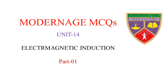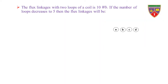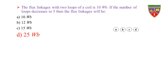Modern Age MCQs, Unit 14: Electromagnetic Induction. Question: The flux linkages with two loops of a coil is 10 Wb. If the number of loops decreases to five, then the flux linkages will be — option A: 10 Wb, option B: 12 Wb, option C: 15 Wb, option D: 25 Wb. The key is 25 Wb, therefore the correct option is D.